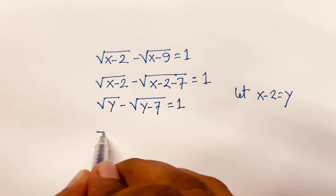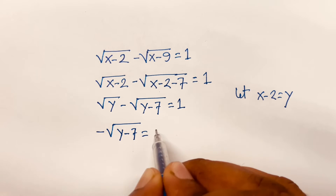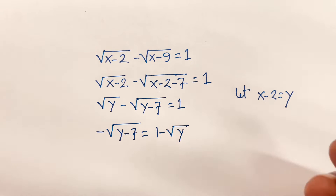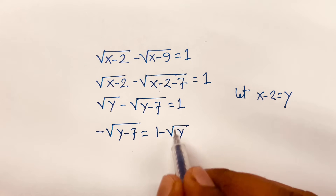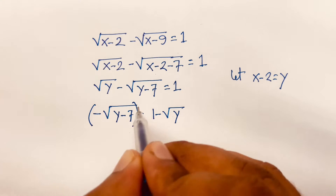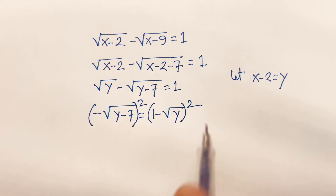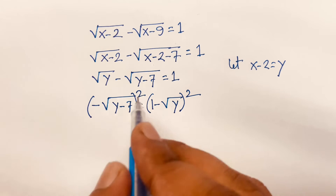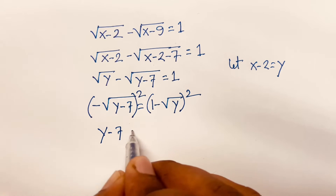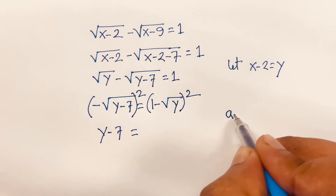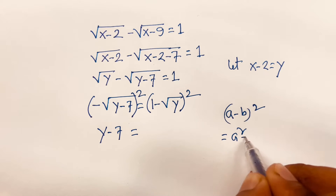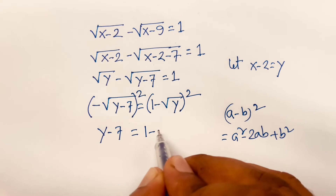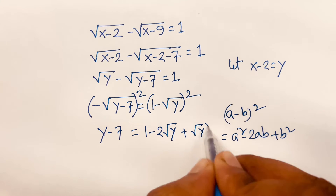Rearranging, minus square root of (y minus 7) equals 1 minus square root y, by moving square root y to the right side. Then I square both sides. The minus becomes positive because the power is an even number, and the square root is cancelled. We get y minus 7 equals (1 minus square root y)² which expands using (a minus b)² equals a² minus 2ab plus b², giving 1 minus 2 square root y plus y.